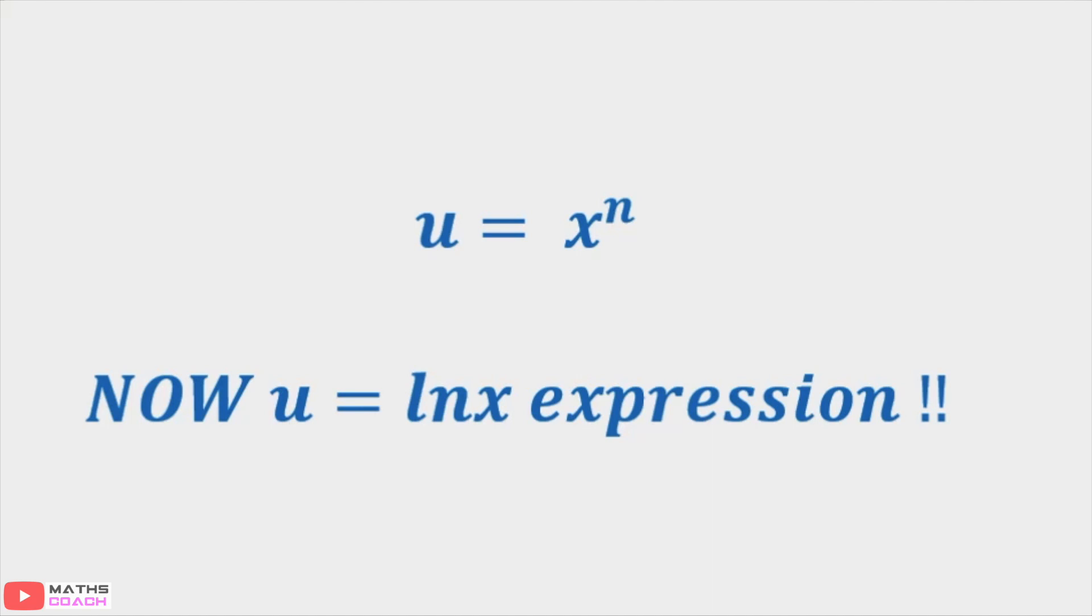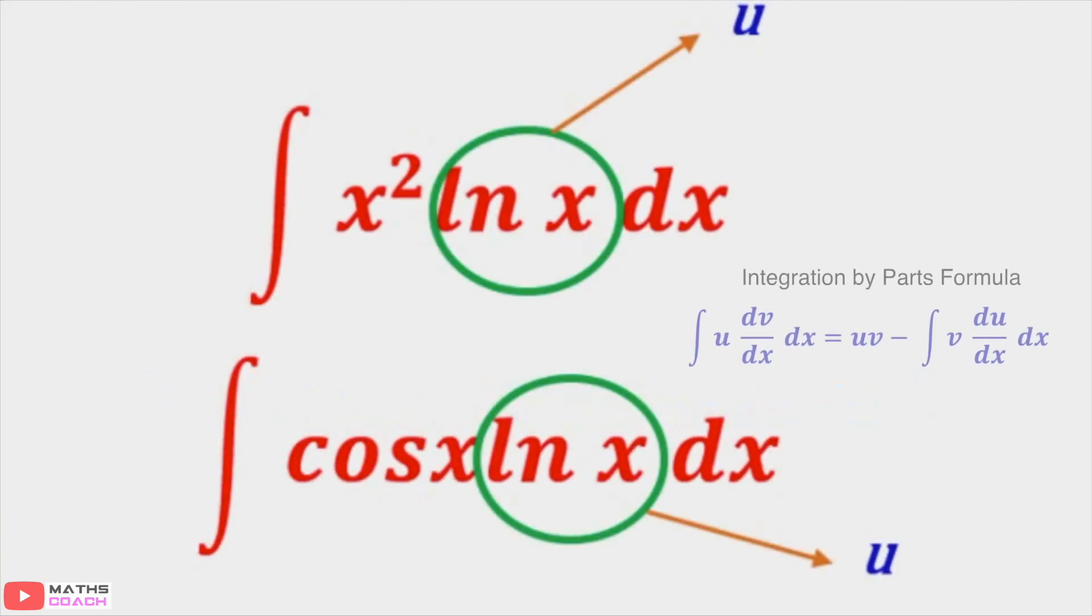Even if the other expression, the neighbouring expression, involves x to power n. Let me just show you. I've got two questions here: x squared ln x and cos x ln x both needed integrating with respect to x. As both questions involve ln x as an expression, automatically that becomes u. The x squared and the cos x in this case would then automatically become dv/dx.